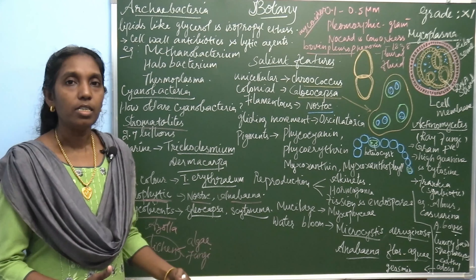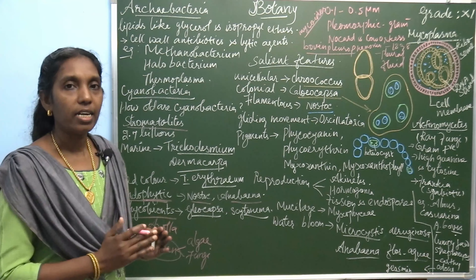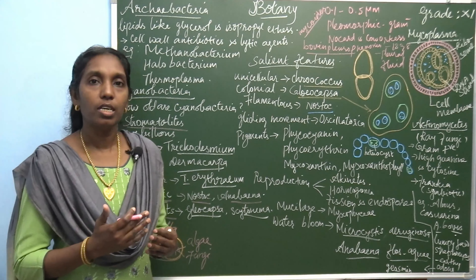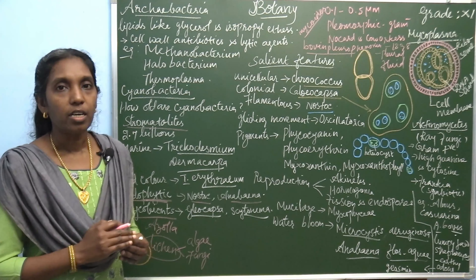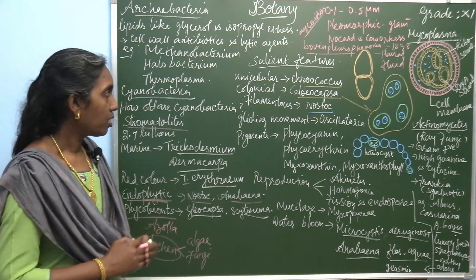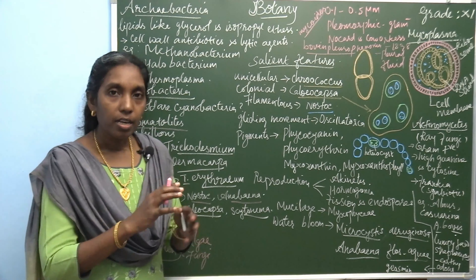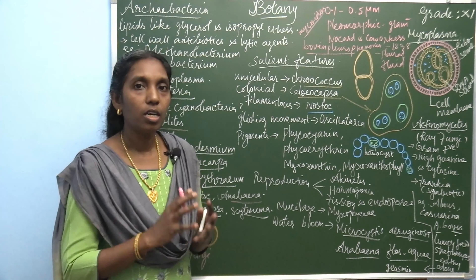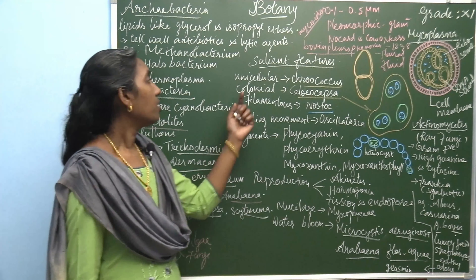Now let us see the salient features of cyanobacteria. These organisms are evolutionary records — primitive prokaryotic photosynthetic organisms. Because of the presence of pigments, they synthesize their own food. The protoplasm forms different thallus organizations: unicellular, colonial, and filamentous.